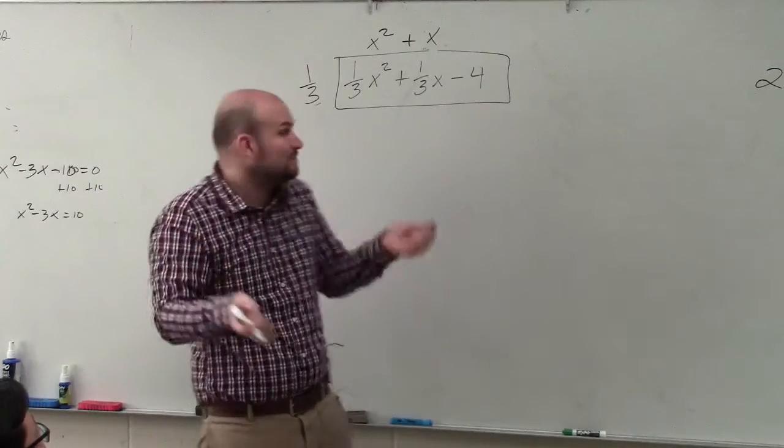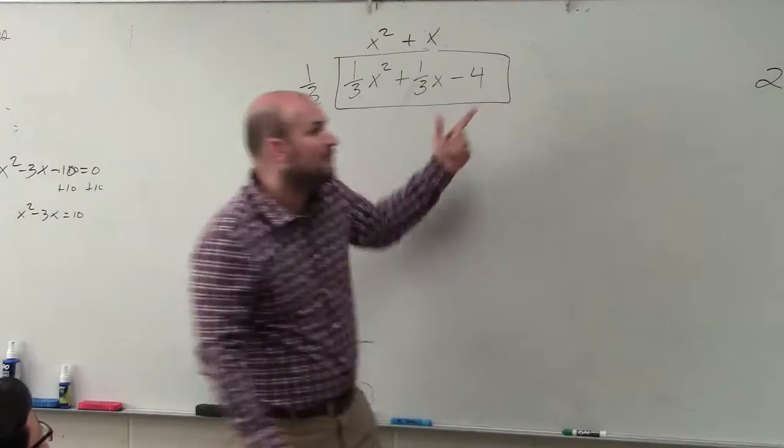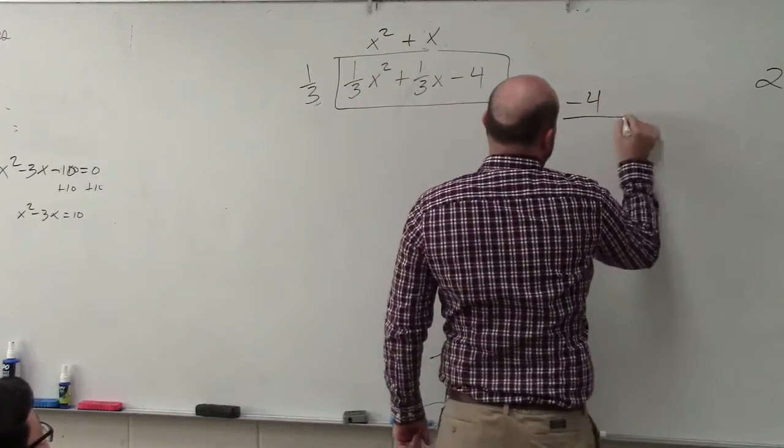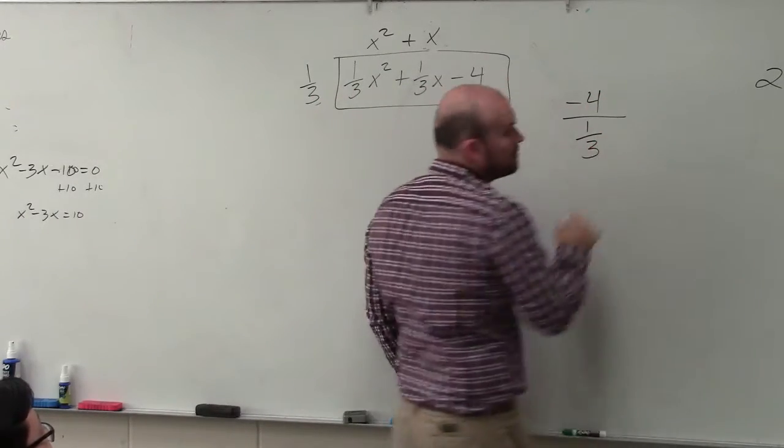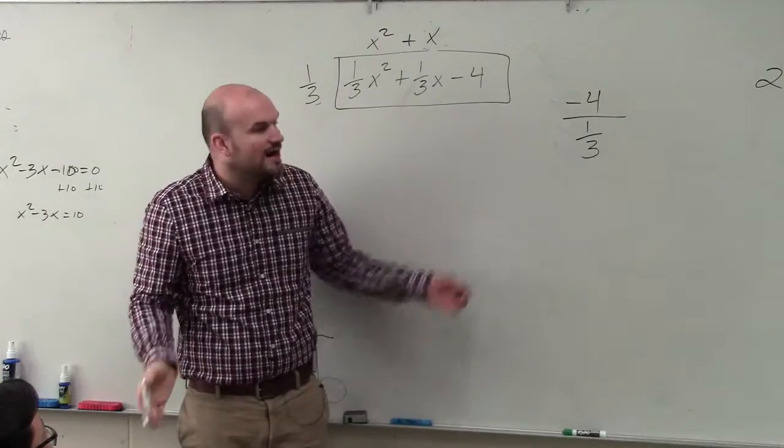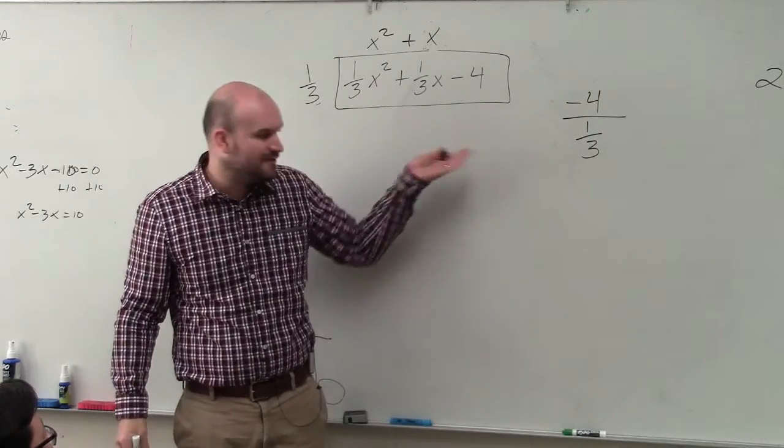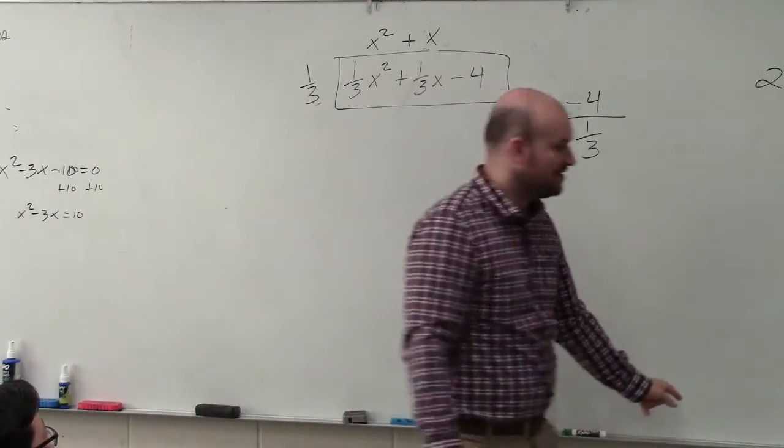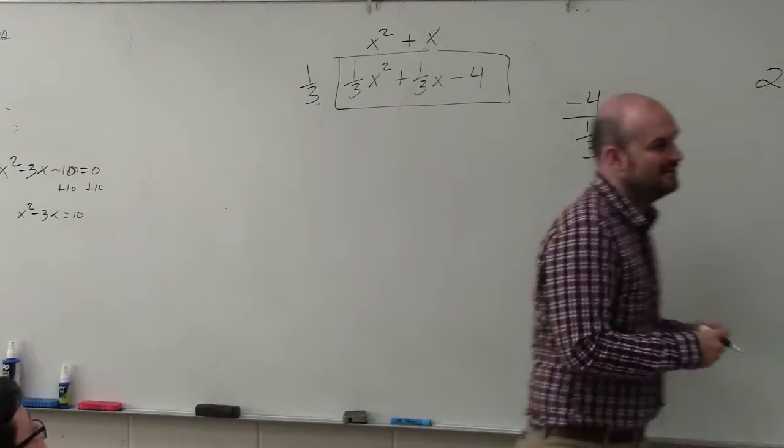So in reality, you find the number that multiplies by 1/3 to give me negative 4. In reality, you're just going to divide negative 4 times 1/3. So how do we divide a whole number by a fraction? We can multiply by the reciprocal.